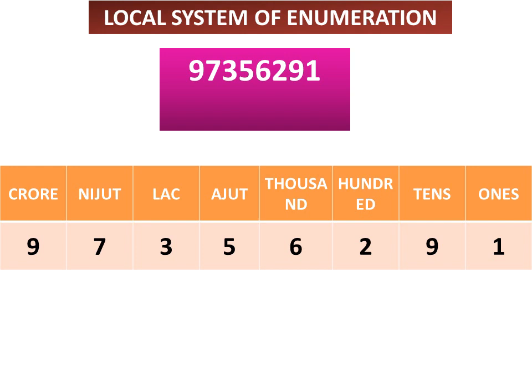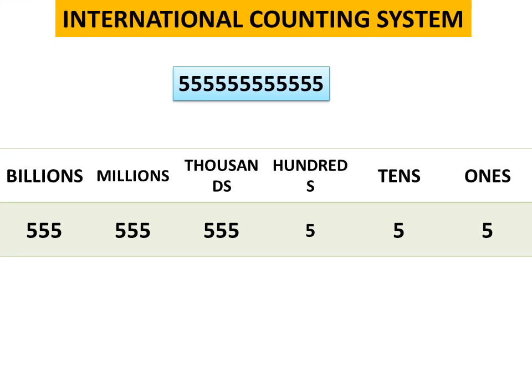In the local system of enumeration, for the number 9,73,56,291, we arrange the digits in a specific order to make sense of the number. We use this system to determine the value of each digit in a connected and structured way.